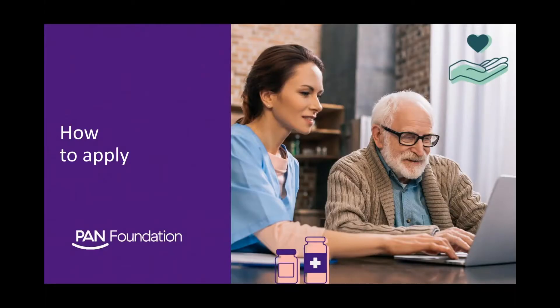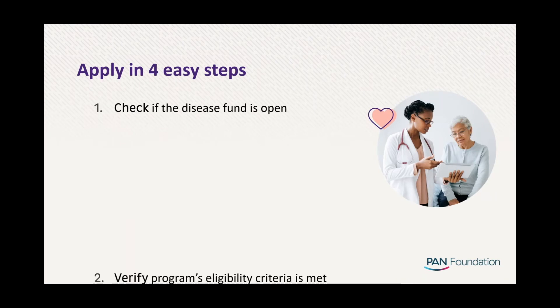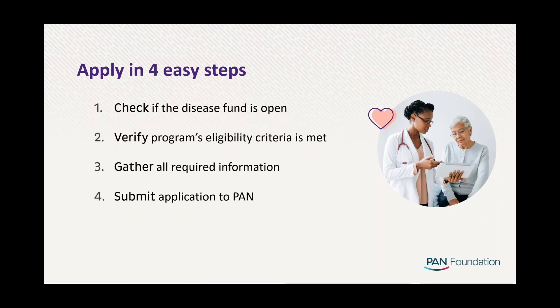The next few slides focus on how to apply for assistance with PAN. There are four easy steps: first, check to see if the fund you're interested in is open; second, verify if the patient meets the eligibility criteria; third, gather all the required information; and fourth, contact PAN to apply. Let's take this checklist and review what is needed at each step.